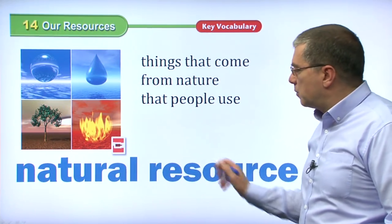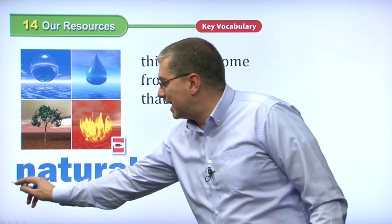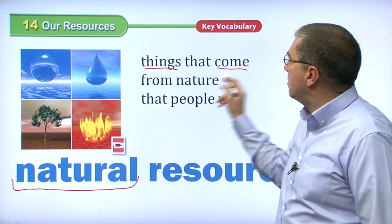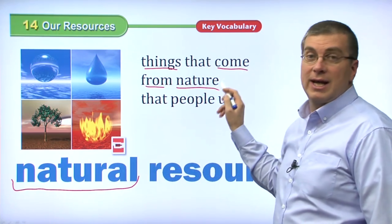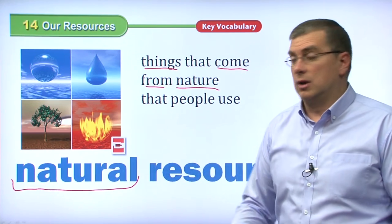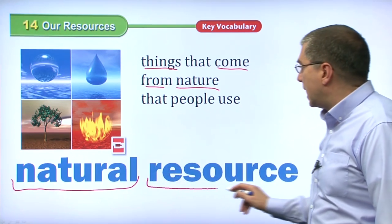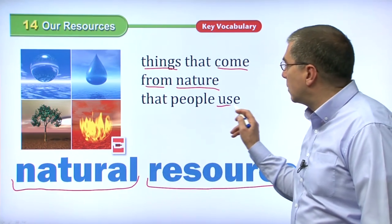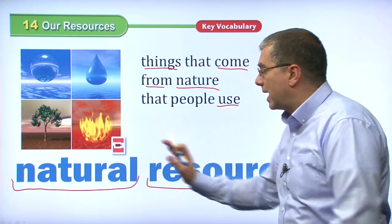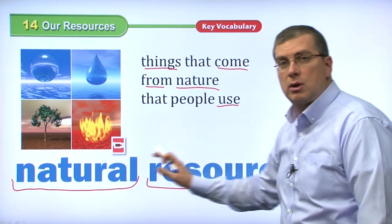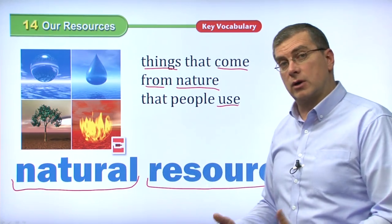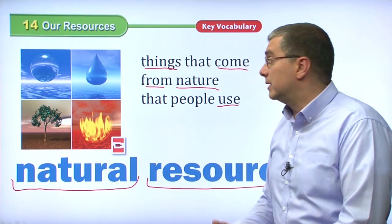Well, it's really two parts we have to think about. Natural — things that come from nature. If they come from nature, they are natural. Then we have resource — something that we use. We put these two words together and we have natural resource: it comes from nature, and we use it. So it is a natural resource.